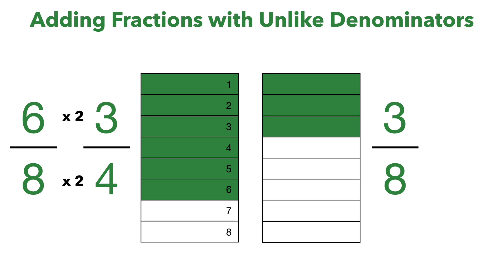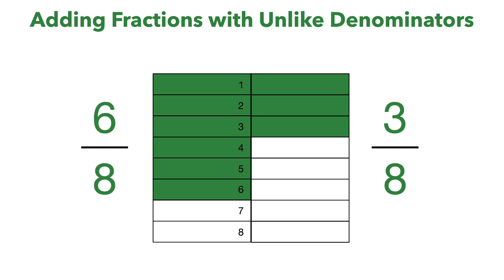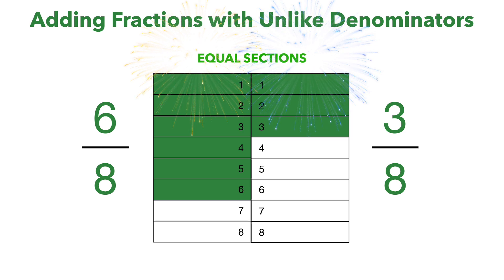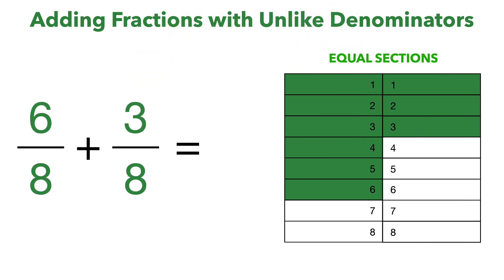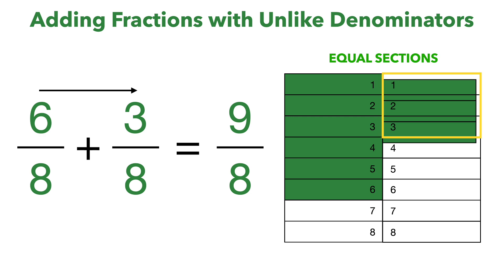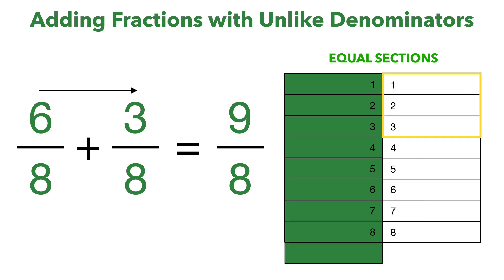Now we have 6 eighths, and as you can see we didn't increase or decrease the green part — all we did was cut each section into 2. But now if you compare these, we have equal sections. So we can now add 6 eighths and 3 eighths because we have equal sections. We're going to add across the top first: 6 plus 3 is 9, and then our denominator stays the same which is 8. If we take these 3 blocks and add them to the 6, that gives us 9 — so 6 eighths plus 3 eighths is 9 eighths. That is why you need common denominators when adding or subtracting fractions.